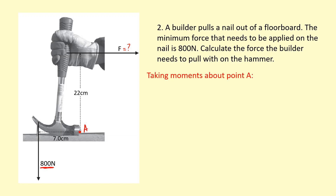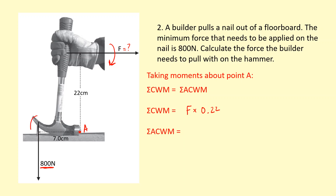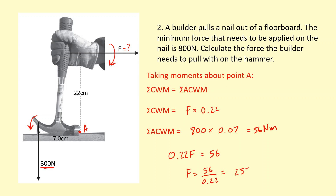It's best to take moments about point A. Taking moments about A: the sum of clockwise moments equals the sum of anticlockwise moments. The clockwise moment comes from the builder's force F times the distance 0.22 meters. The anticlockwise moment comes from the nail pulling on the hammer: 800 times 0.07 meters equals 56 newton meters. So 0.22F equals 56, therefore F equals 56 over 0.22, which is 255 newtons.